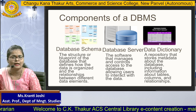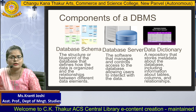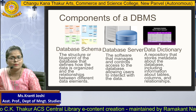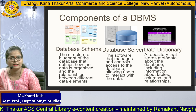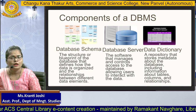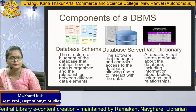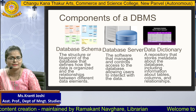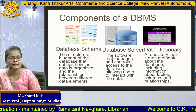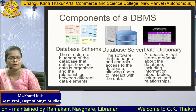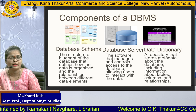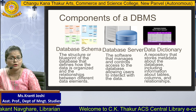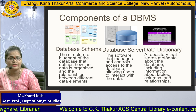The third component is the data dictionary — a repository that stores metadata about the database, including information about tables, columns, and relationships. In the data dictionary, various types of tables are stored and you can get information about those tables, including all details about what kinds of tables are stored.